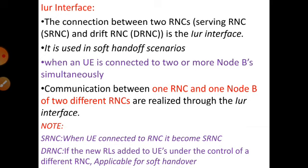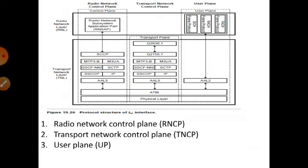That means we are using one RNC and one Node B, and this Node B station has two different types of RNC. Next we are going to see the protocol structure of this IUR interface. This IUR interface has three types of planes: RNCP, TNCP, and User Plane.